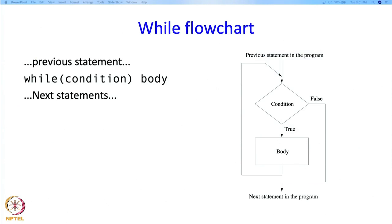The while statement is best understood with its flowchart. In a hypothetical program there is a previous statement, then the while statement, then a next statement. The previous statement executes first; then the while condition is evaluated. If false, execution jumps to the next statement. If true, the body executes, and after the body we go back and evaluate the condition again. This continues until the condition is false, at which point we proceed to the next statement.